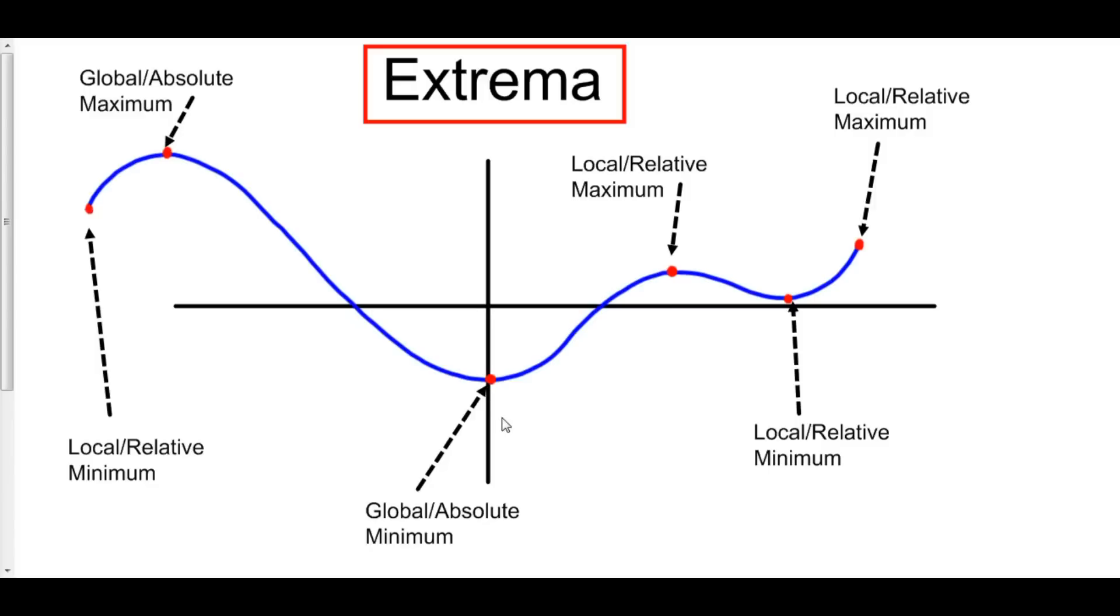Down here, we have the global minimum. Now this is a global minimum because it is the lowest value of the entire function. So, global max, highest value of the whole function. Global min, the lowest value of the whole function.